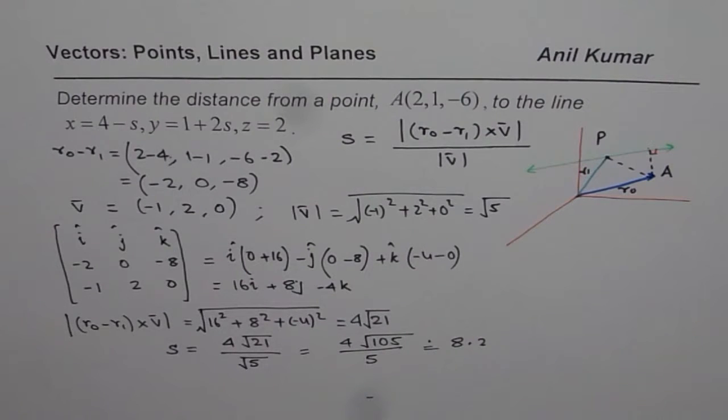I hope you understand that whenever you are using directions at that time to find the distance, always use cross product. But in case you are using normal of a plane or something, in that case, you could use dot product. So that is a key thing to remember. I hope this helps. Thank you and all the best.